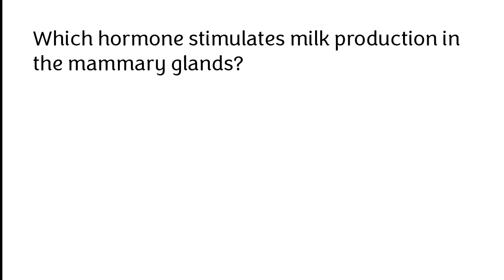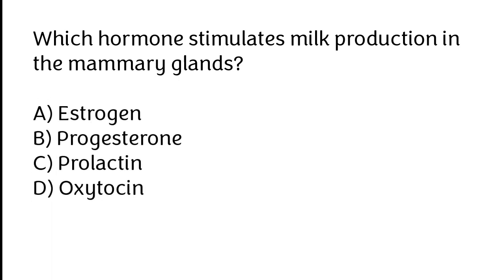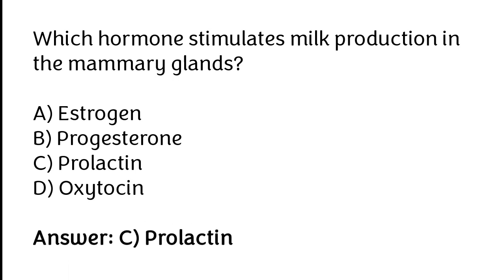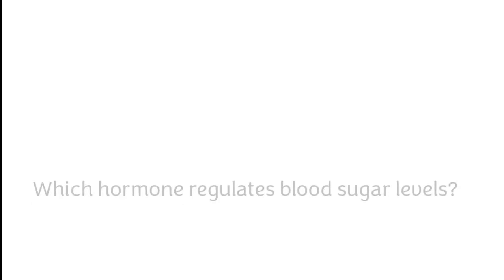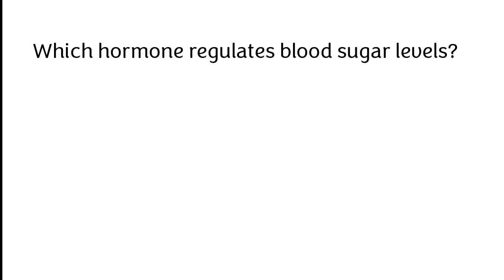Which hormone stimulates milk production in the mammary glands? Estrogen, progesterone, prolactin, oxytocin. The correct answer is option C: prolactin hormone stimulates milk production in the mammary glands.